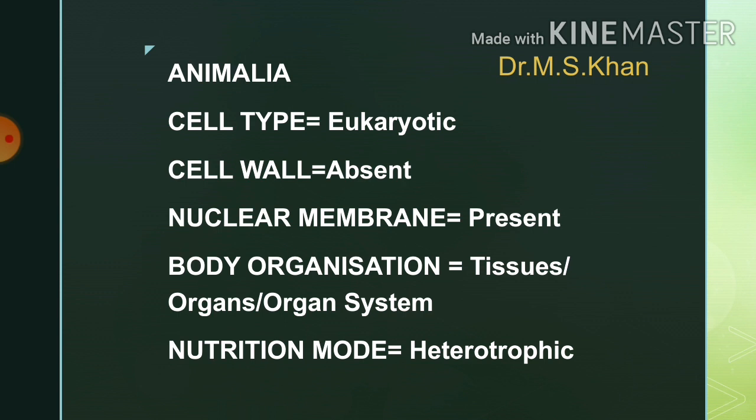The last kingdom is Kingdom Animalia. Cell type is eukaryotic. Cell wall is absent. Nuclear membrane is present. Body organization is at the level of tissues, organs, and organ systems. Mode of nutrition is heterotrophic. These are the characteristic features of the Five Kingdom Classification, proposed by R.H. Whittaker in 1969.